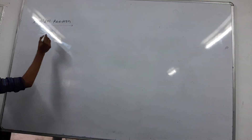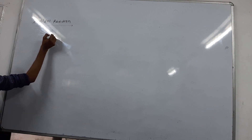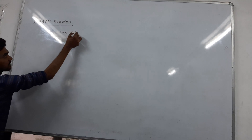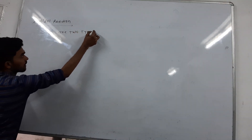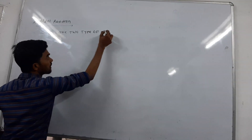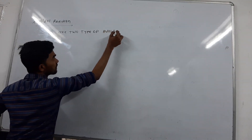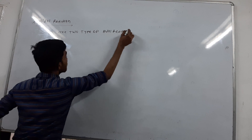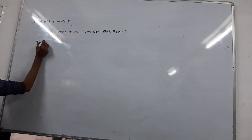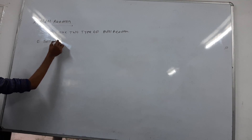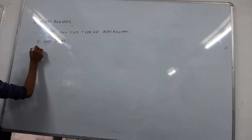There are two types of aldol reactions. First is self-aldol and second is cross-aldol. So let's begin. Self-aldol reaction will be explained first.